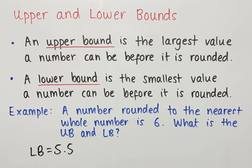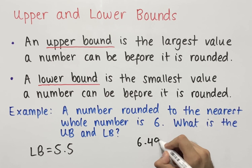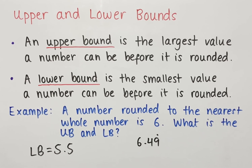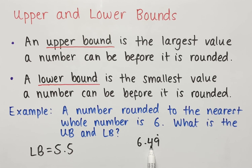Now, for the upper bound, we require the biggest possible number that when rounded to the nearest whole number equals 6. Technically, the upper bound for 6 is 6.49 recurring, since there is no other number bigger than this that would round to 6 to the nearest whole number. The first decimal place determines whether we round up or down, and here the 4 in the first decimal place means this number rounds down to 6.